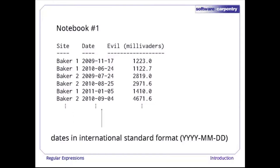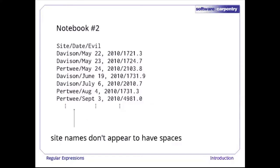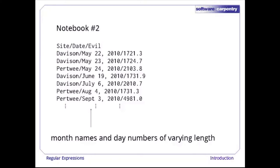The good news is the dates are written in the international standard format: four digits for the year, two for the month, and two for the day. In the second notebook, they're using slashes as separators. There don't appear to be spaces in the site names, but the month names and day numbers are varying length, the months are text, and the order is month-day-year rather than year-month-day.